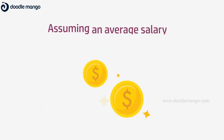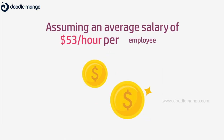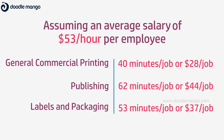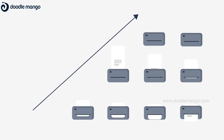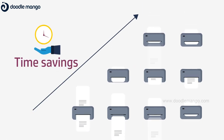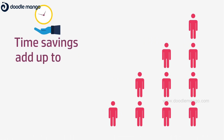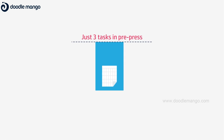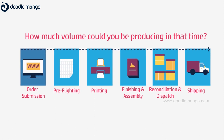Assuming an average salary of $53 per employee, Keypoint Intelligence calculated the following. When you think that the average printer is running upwards of 3,000 jobs per month, you can see how these time savings can soon add up into full-time employees required. And that's just three tasks in your pre-press department. Imagine the impact of automating end-to-end from orders to printing to shipping.